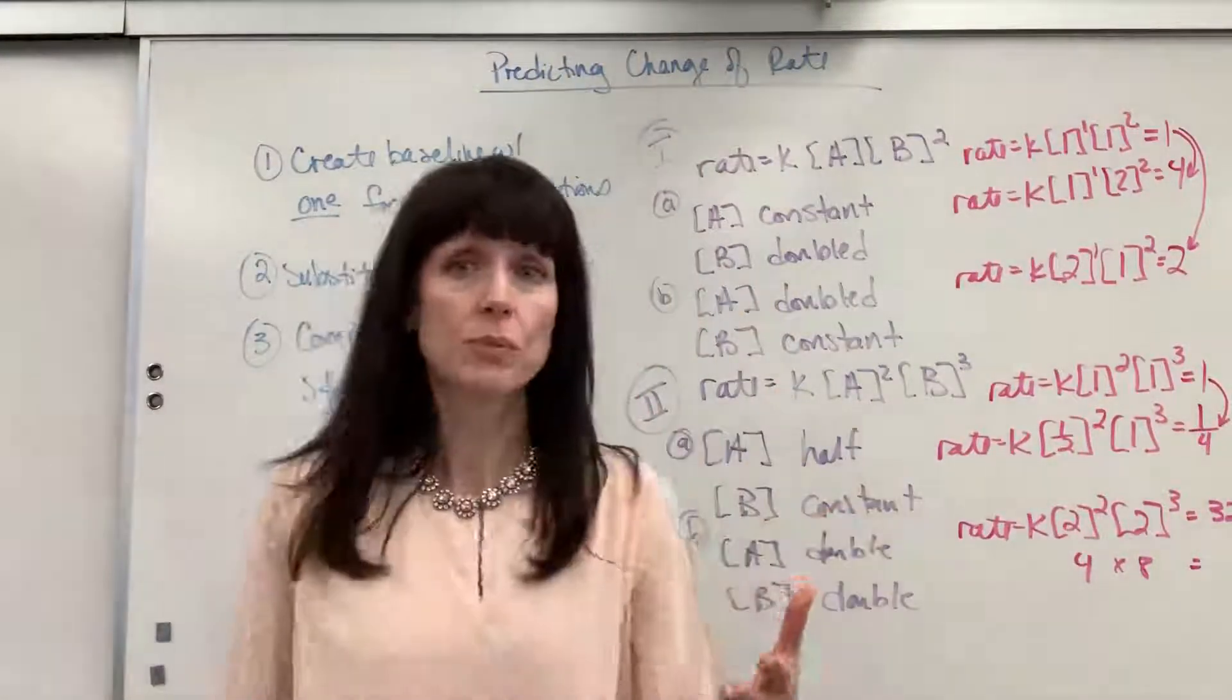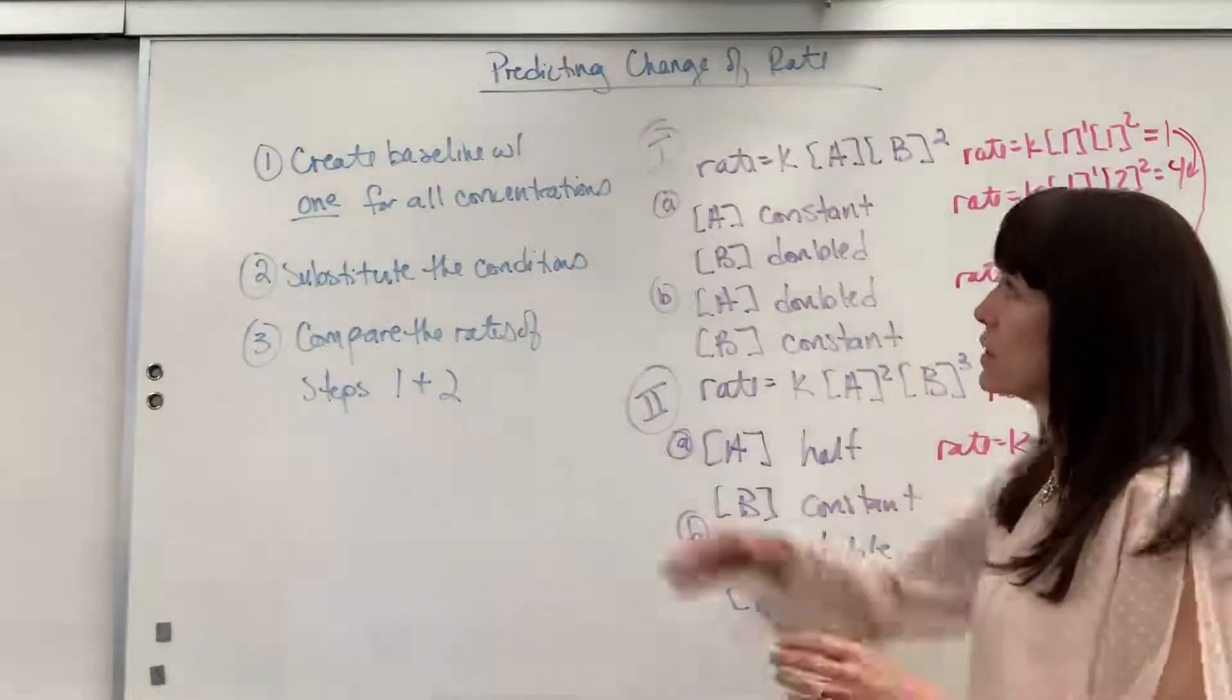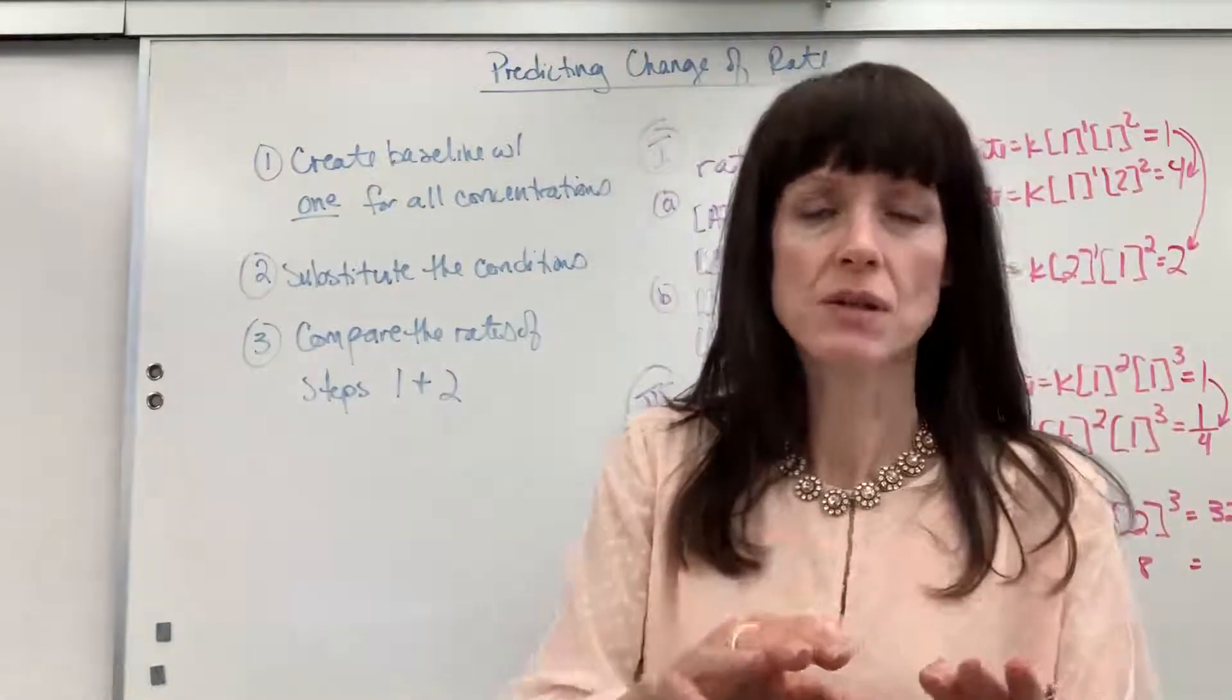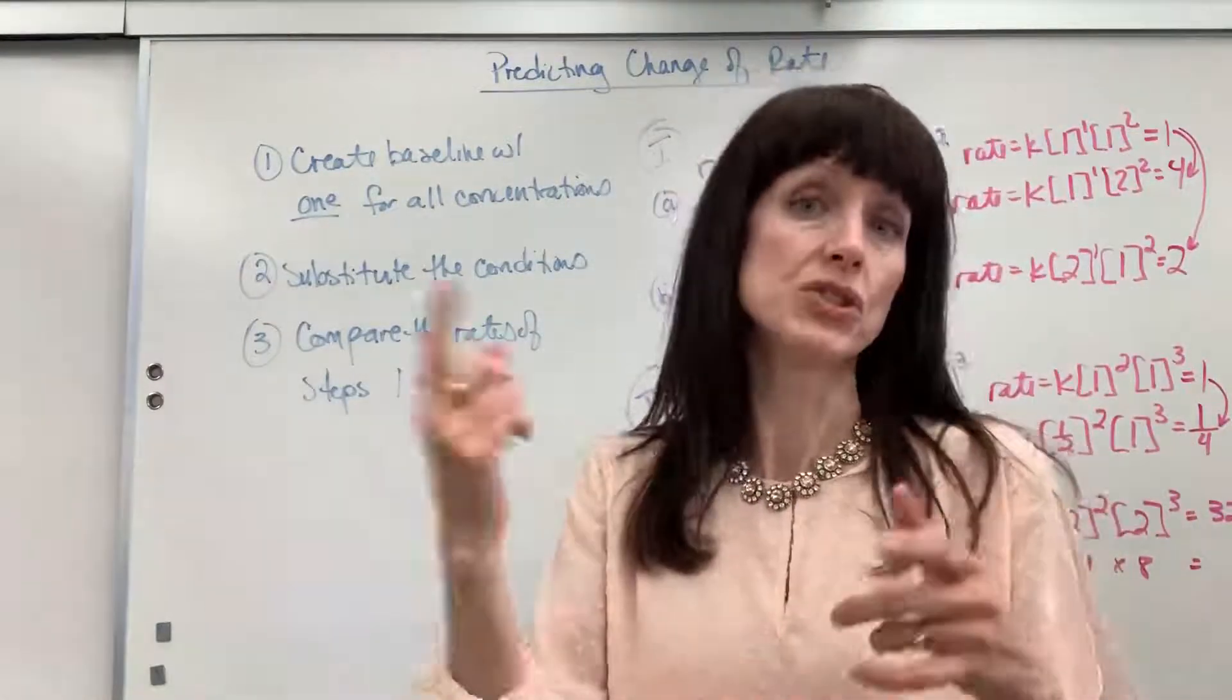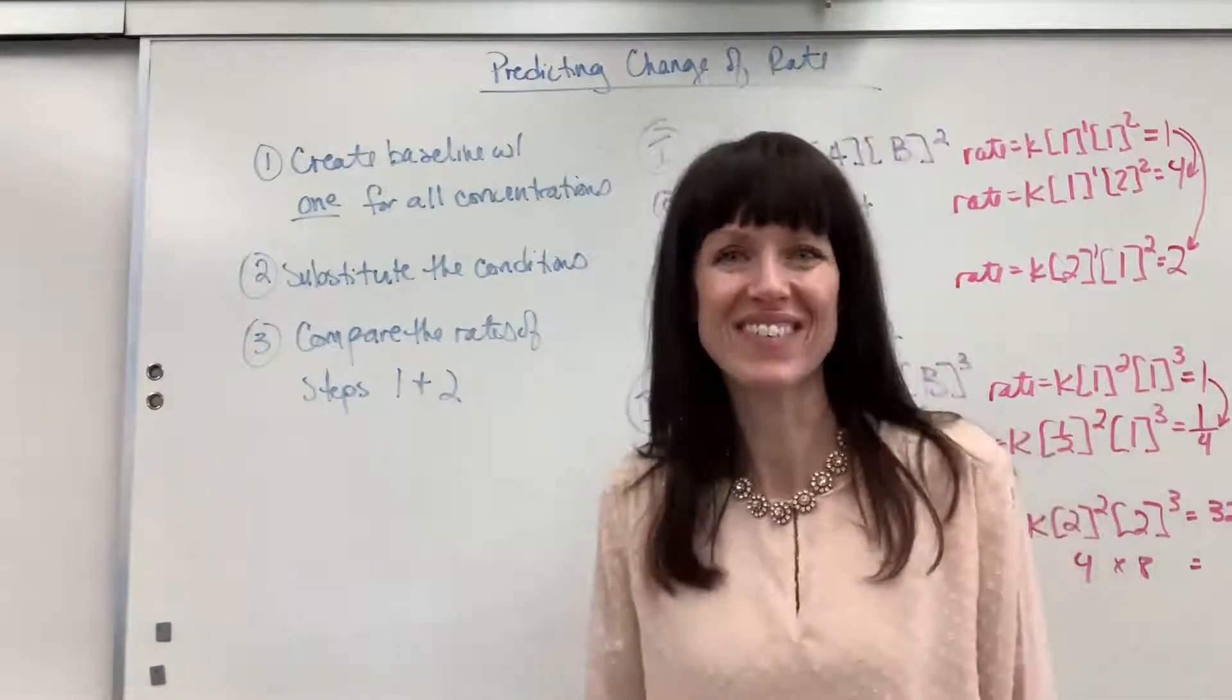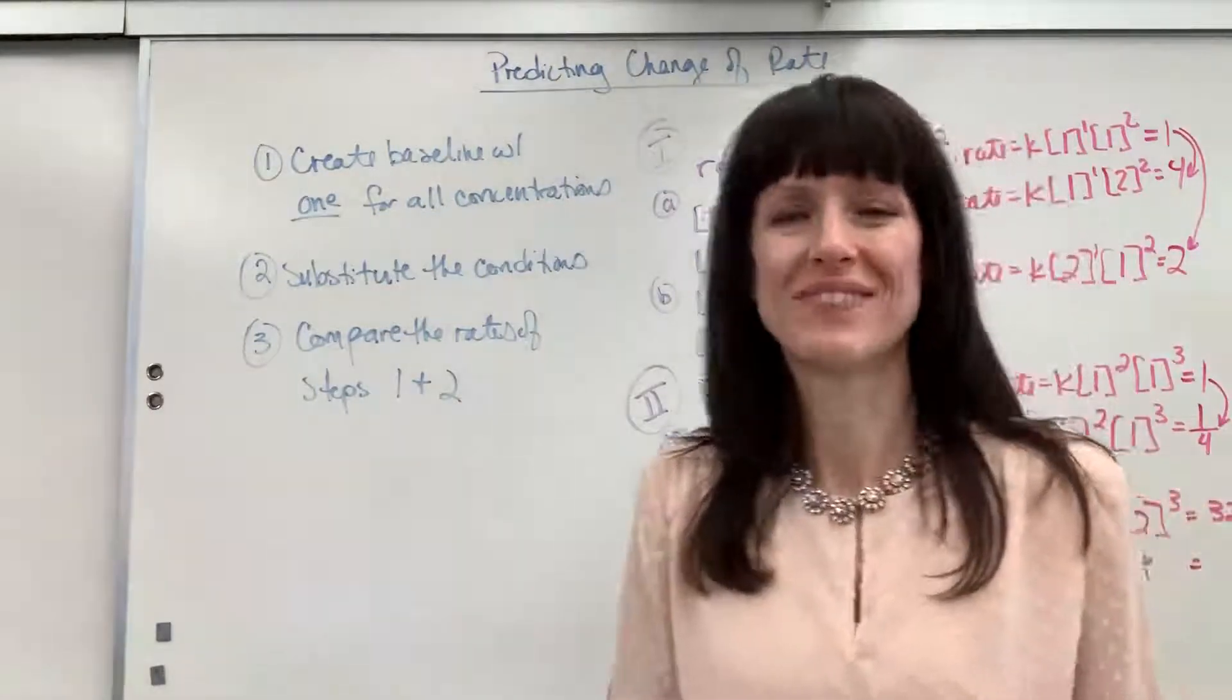Okay, so that's how you predict a change in rate if you're given changes of concentrations. Create that baseline just by putting one in. Then you substitute in the conditions that they give you. Just compare the rates, and you'll be able to predict the change in rate. All right, good job. Have a nice day. If you have any questions on rate, look under the rate playlist on Lane Think. Thanks.